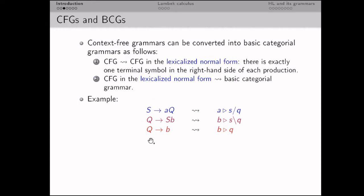Let us consider the grammar from the first example. Given the production S → AQ, we informally divide both sides by Q, putting it under the denominator. We choose the right division because Q stands to the right of A, so this production is converted to: A corresponds to S right-division Q. Similarly for another production, but the direction of the division is different.